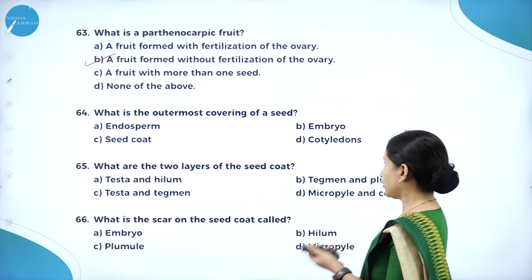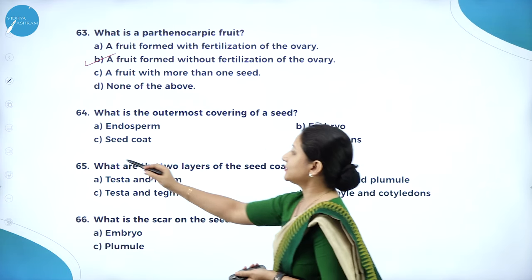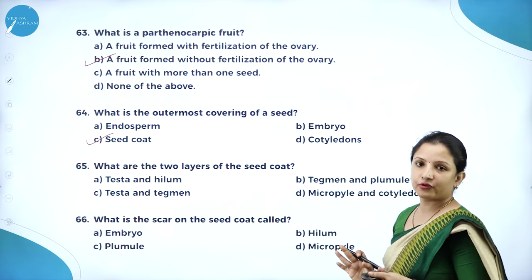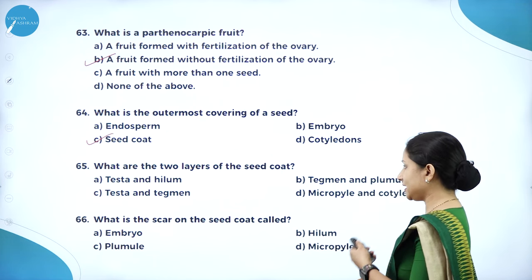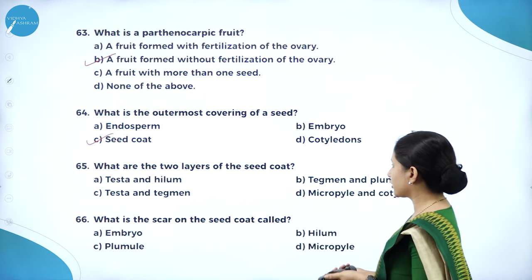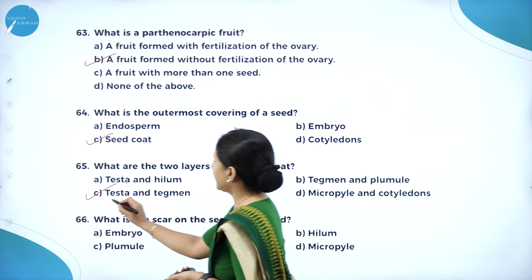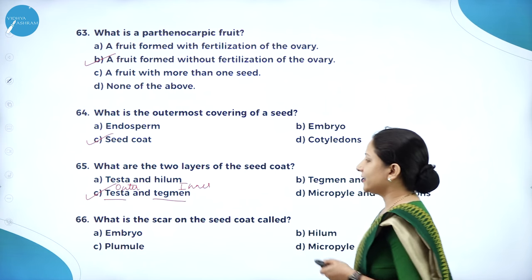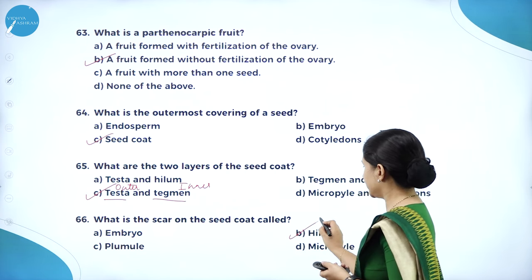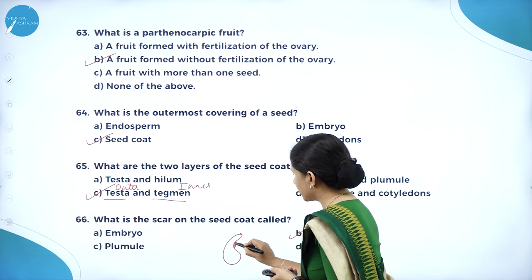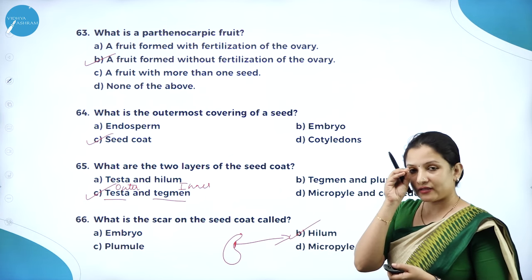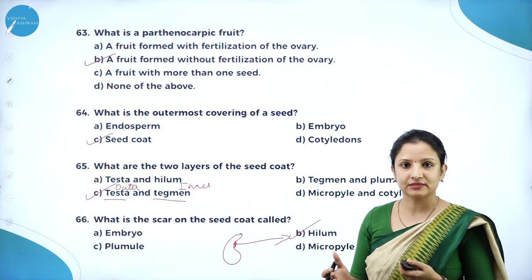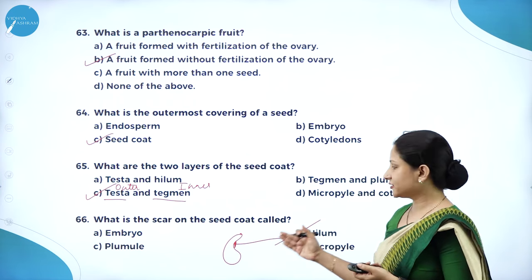What is the outermost covering of a seed? It is the seed coat. Within the seed coat are the cotyledons, then the endosperm, and inside is the embryo. What are the two layers of the seed coat? Testa and tegmen — testa forms the outer covering and tegmen forms the inner covering. What is the scar on the seed coat called? It is called hilum — a scar developed from the placenta, similar to the belly button in humans.